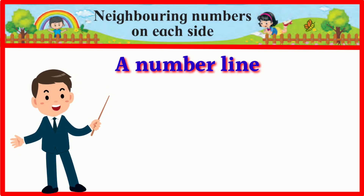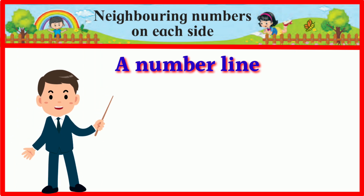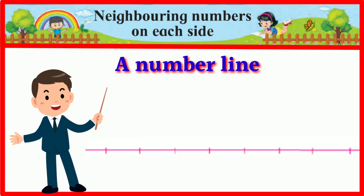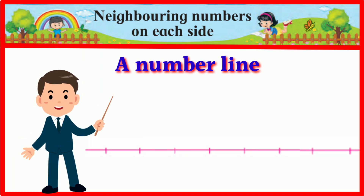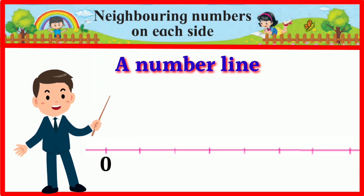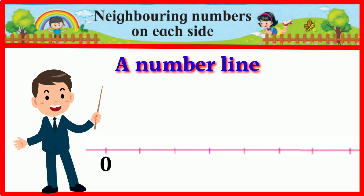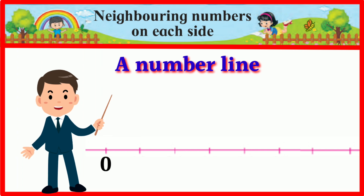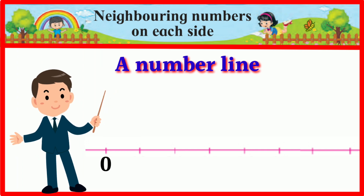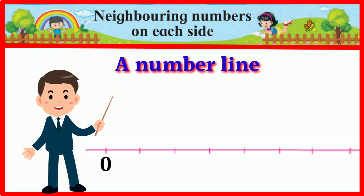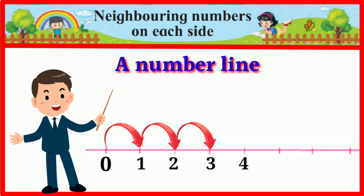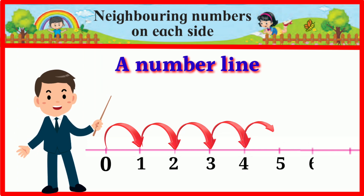Children, let's see here is how we get a number line. A mark is made for the number zero at the left side of a line. From there, counting forward towards the right, the numbers 1, 2, 3, 4, 5 are marked at equal distances.